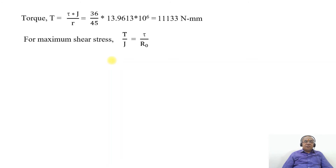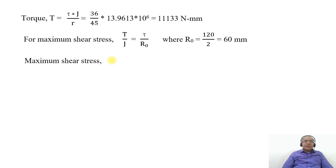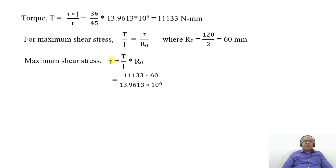For the maximum shear stress, T by J equals tau by R_naught, where R_naught equals D_naught by 2, which is 120 by 2, equals 60 mm. The maximum shear stress tau equals T by J into R_naught. Torque is 111133, R_naught is 60, divided by J which is 13.9613 into 10 to the power of 6. On simplification, the maximum shear stress equals 48 Newton per mm square.